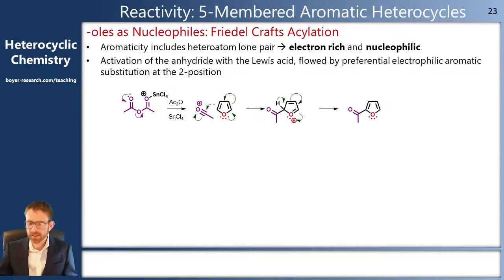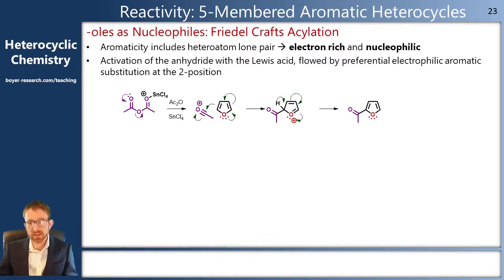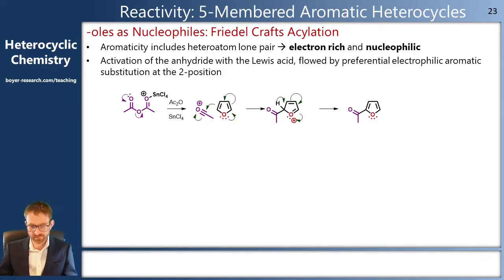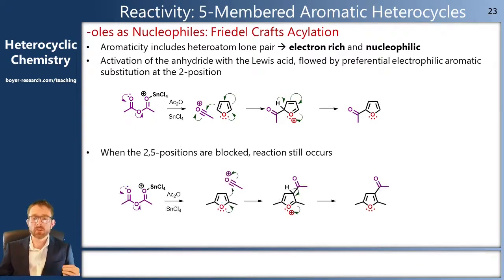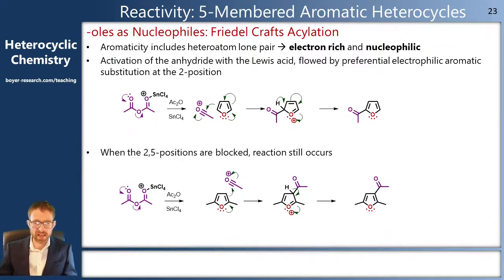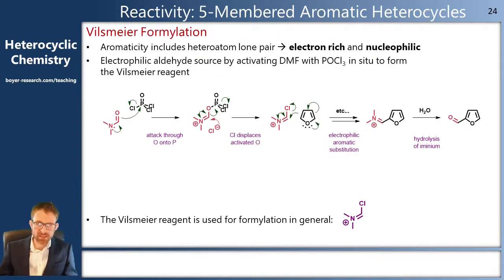We can see this at play in our usual electrophilic aromatic substitution reactions. If we take something like an anhydride and activate it with a Lewis acid, that's an excellent electrophile, so our furan will attack at the two position preferentially. However, if we put a substituent at the two and five positions, such as a methyl group, then we do get reaction at the three and four positions instead.